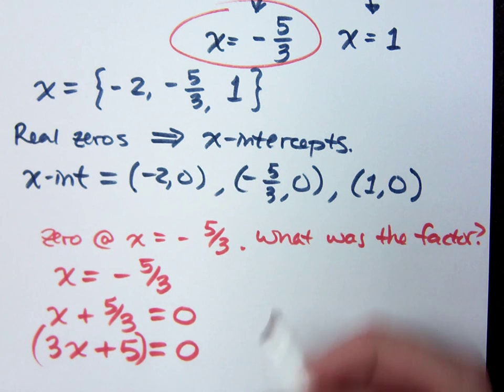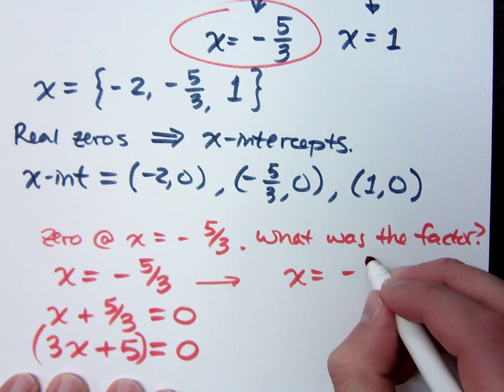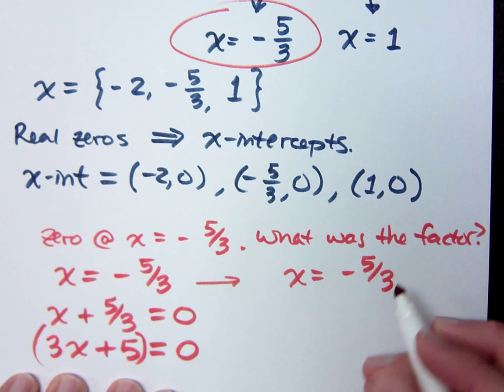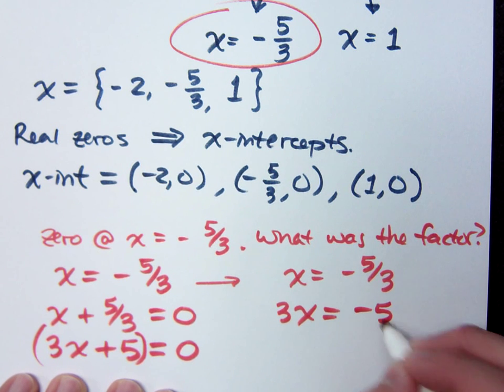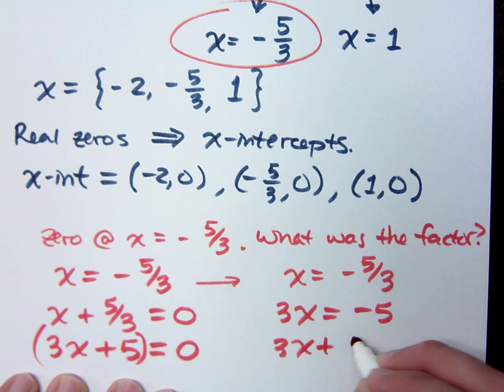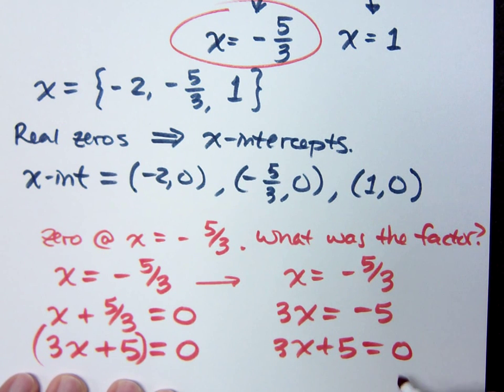And you also could have done it a slightly different way. You could have multiplied both sides times 3, so you get 3x equals negative 5, and then you can move the 5 over, and so you see where it came from. It's still 3x plus 5.